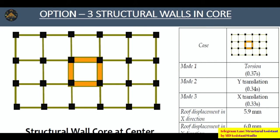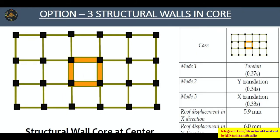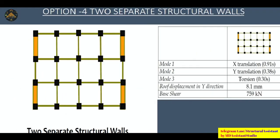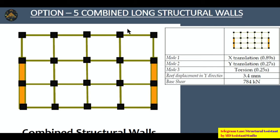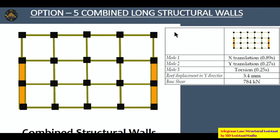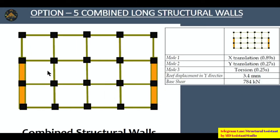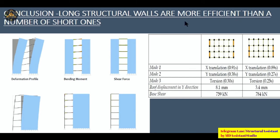With innermost core walls, displacement reduced to approximately 6 mm, down from 12.4 mm. Option 4, two separate structural walls, gives a roof displacement of only 8.1 mm. Option 5, a somewhat eccentric arrangement with longer continuous structural walls, gives a roof displacement of only 3.4 mm. The conclusion is that long structural walls are more efficient than a number of short ones.